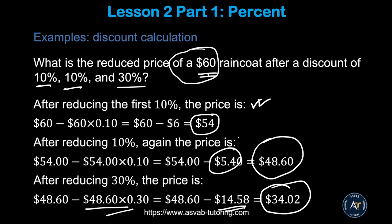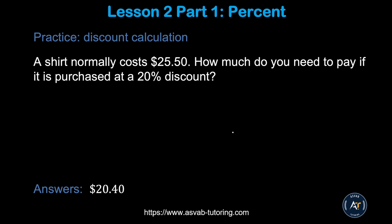Try it yourself: a shirt normally costs $25.50 — how much do you need to pay after a 20% discount? Convert the percent to decimal, multiply by $25.50 to get the discount amount, then subtract from $25.50. You should get the correct answer with that approach.